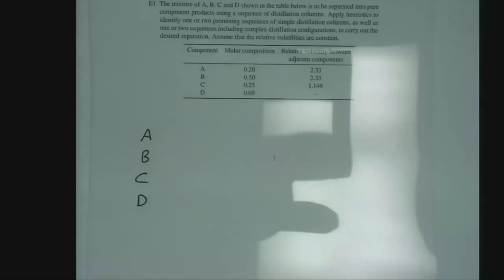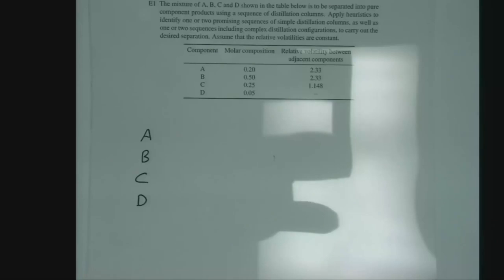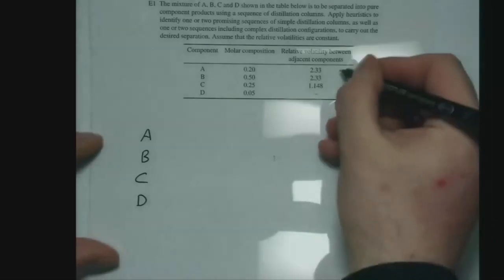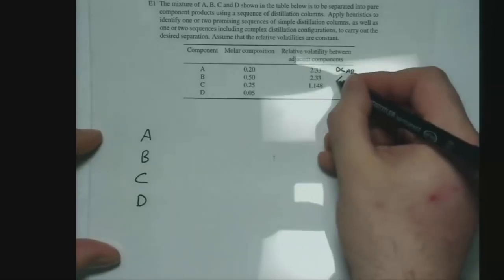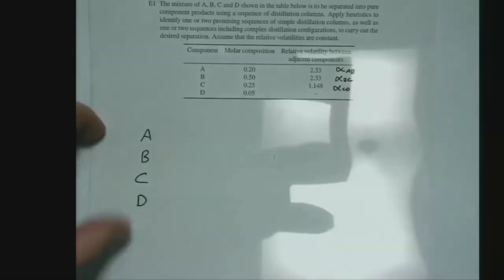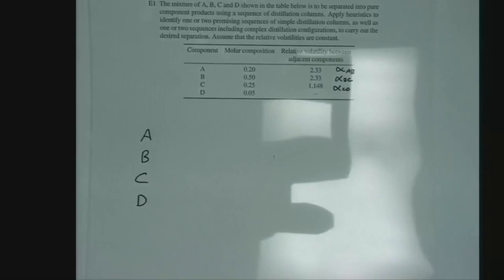We've been given the table, and the first thing to notice is that it tells us the relative volatility between adjacent components. So we know that is our A to B, that is our D to C, and that is our C to D relative volatilities.